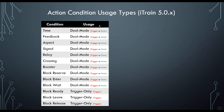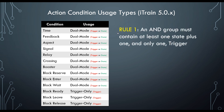So let's define some rules for constructing an AND-based condition. Rule 1: an AND group must contain at least one state plus one and only one trigger. Rule 2: an AND group must contain at least one state.